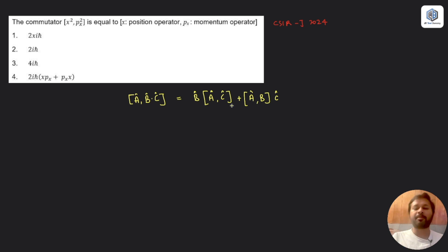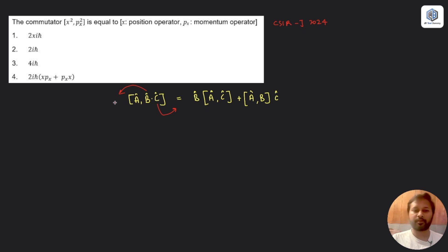The position of operators is very important because you operate them on the wave function depending on their order. As a mnemonic: for [A, B·C], take B outside and write it first with [A, C], then take C to the end with [A, B] in front, and add a plus sign between them. Now let us apply this to the given question.